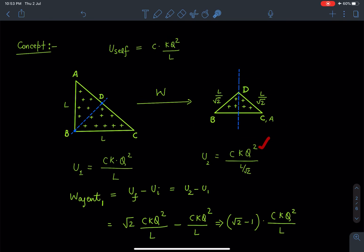So in the formula also that number remains same because geometry is same, total charge remains same, and what was earlier L has become L/√2. So this W_agent1, this first W, we can write it as U_final minus U_initial or it is U2 minus U1. So on substituting the value we are going to get this W as (√2 - 1)Ckq^2/L